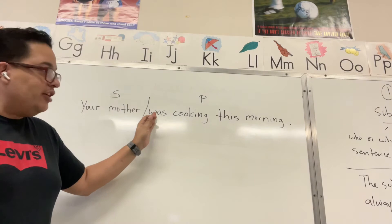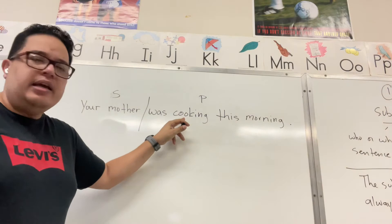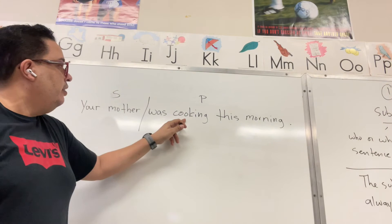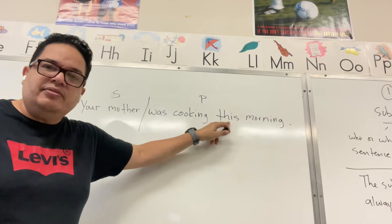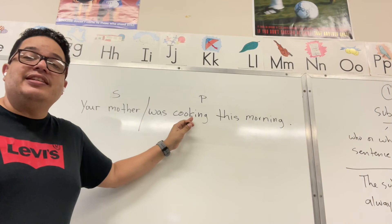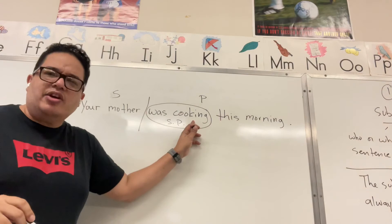So what do we have to do? We have to go to the next word to see if there is action, and we will stop when the action stops. 'Was' — 'cooking.' Is 'cooking' an action? Yes it is. Do we stop there? No, we continue to see if there is more action. 'Was cooking' — 'this.' Is 'this' an action? No. So the action stops there. The exact verb of this sentence is 'was cooking.' This is the simple predicate.